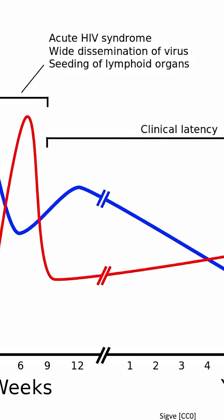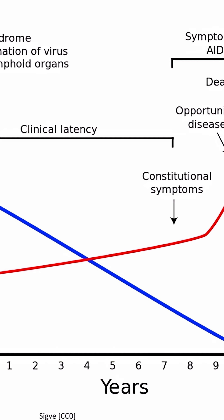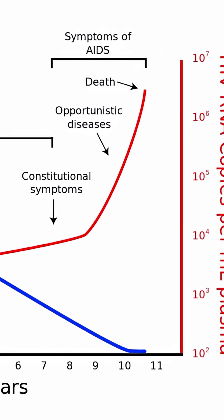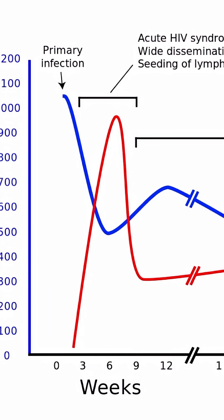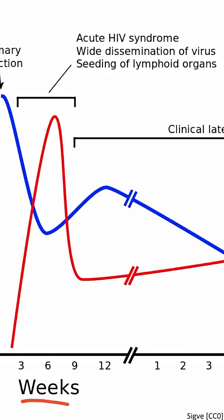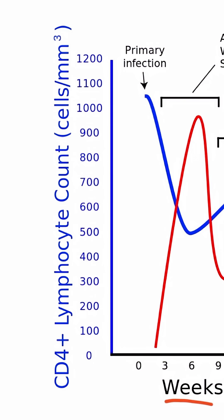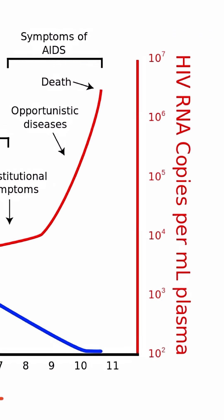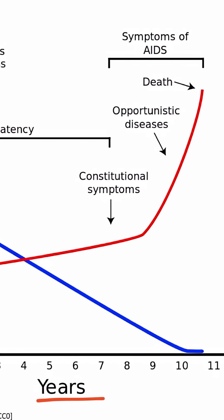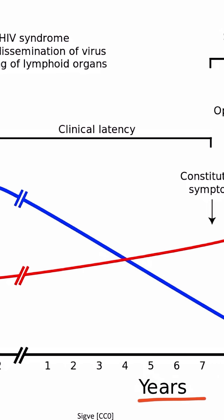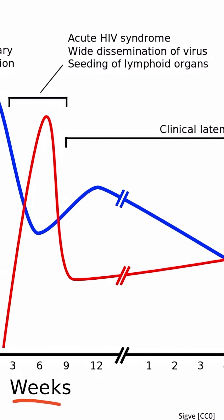This is a great image demonstrating the time course of untreated HIV infections. The x-axis represents time, which we can see in weeks and years. The y-axis in blue represents the CD4 count, while the y-axis in red represents the viral load.